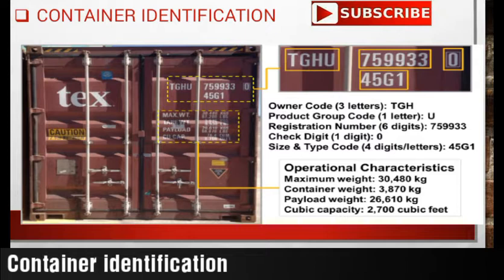We will start with the owner's code. The owner's code is of three letters — here we can see it is TGS. So these three letters are the owner's code. Now after TGS, we can see there is a letter U. The letter U is nothing but a product group code — that is a one-letter code after the owner's code.